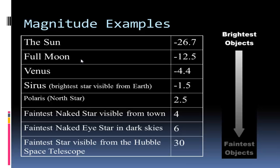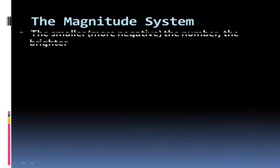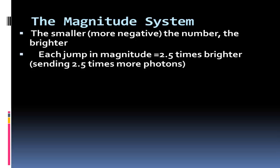Let's talk about this magnitude system a little bit more. The smaller or more negative the number, the brighter it is. Each jump - from a two to a one - is not twice as bright, but actually two and a half times brighter mathematically speaking, meaning it's sending out two and a half times more photons.